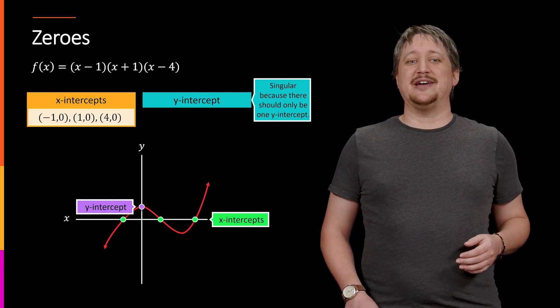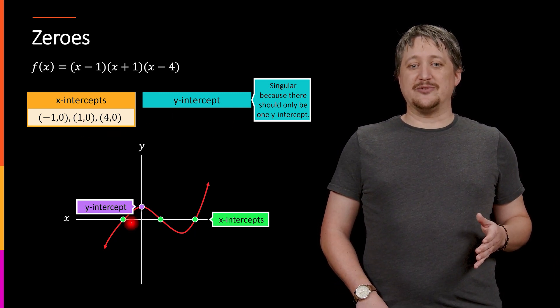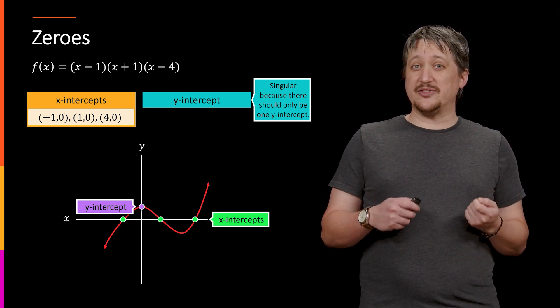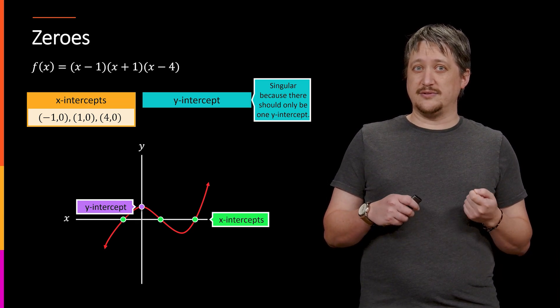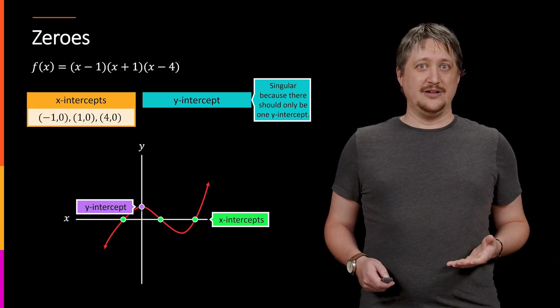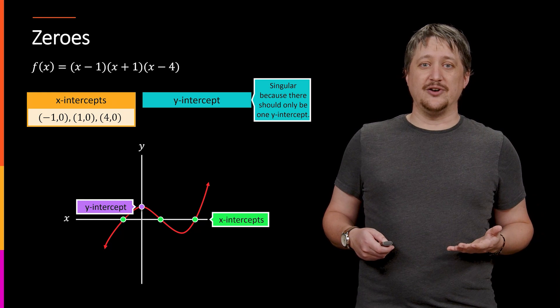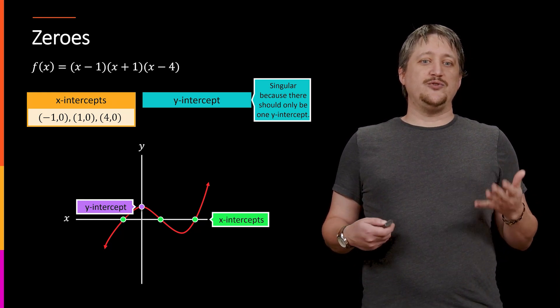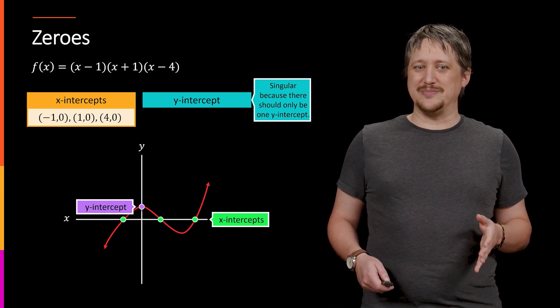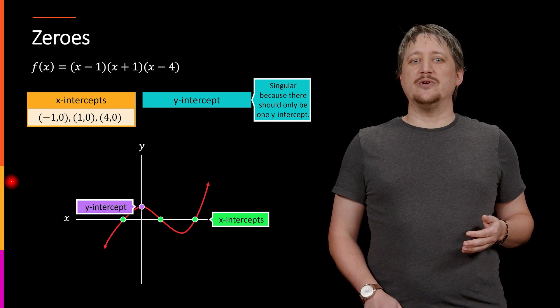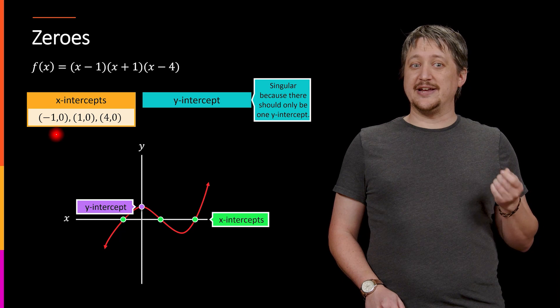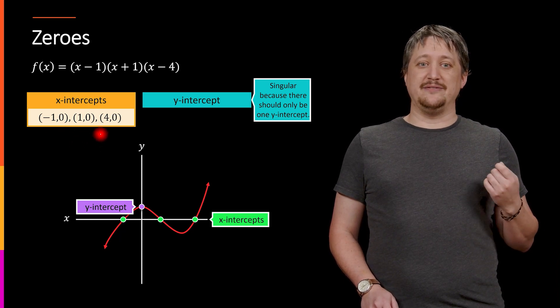The x-intercepts, we have these three different intercepts corresponding to three different points. Now the important thing to know is that intercepts themselves are points. They're implied to be points on a graph, meaning they have a certain format. If you just say the x-intercepts are 1, negative 1, and 4, that's not technically correct because the x-intercepts need to be points where that second value is always zero, the y-value. So the x-intercepts are negative one comma zero, one comma zero, and four comma zero.